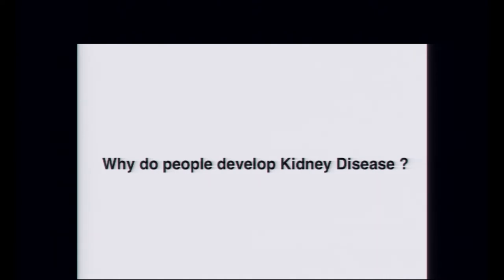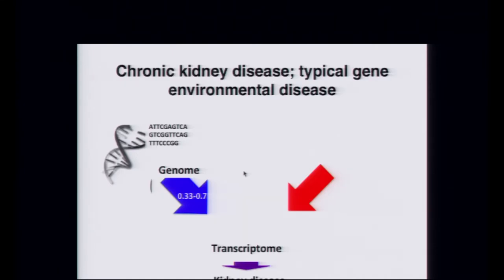So why do people develop kidney disease, and how can we address this? That's what my lab is trying to understand. As Nancy Cox introduced, it's a complex trait. We have a genetic contribution, and heritability numbers range from 0.3 to 0.7. We believe the heritability of GFR among Europeans is around 0.3, while the 0.7 figure comes from African-Americans for end-stage kidney disease. I'll show an example of what could explain that very high heritability, along with a bunch of environmental factors.